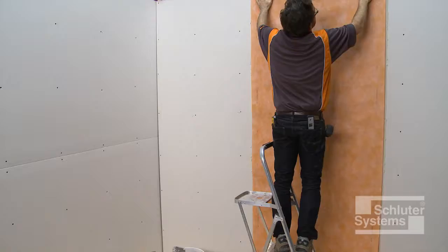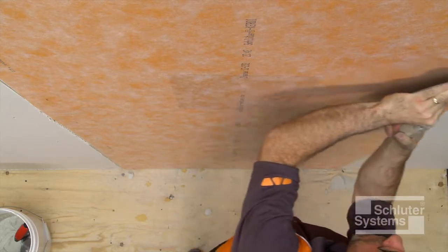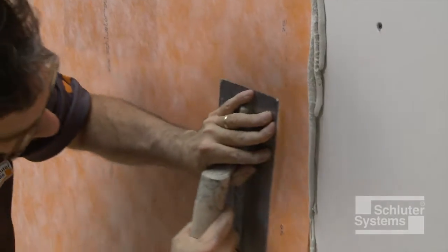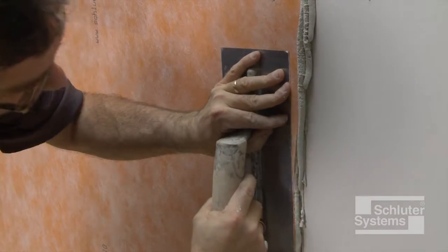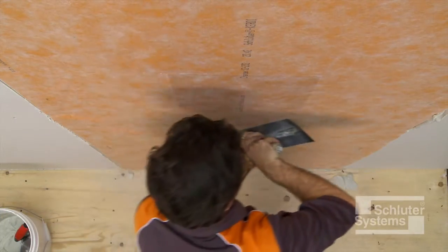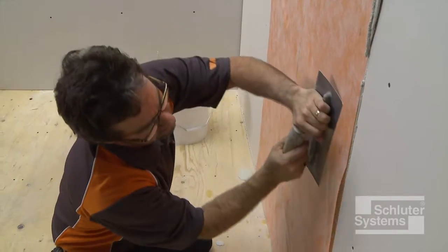Apply the KERDI over the wall. Embed the membrane into the mortar throughout its entire surface using the flat side of the trowel or a drywall finishing knife to ensure proper adhesion and to remove air pockets.